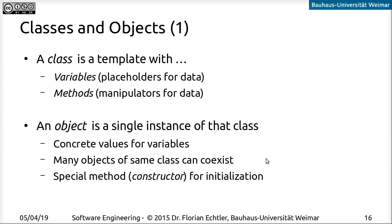We can have multiple objects of one class in most cases. The class usually has a so-called constructor method which is called as soon as the new object is created. So every time a new object is created, the constructor is also called and initializes the variables with default values.